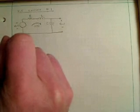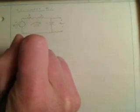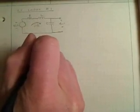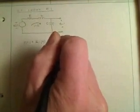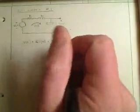And it turned out to be V of t equals R I of t plus L di/dt plus one over C integral i dt.